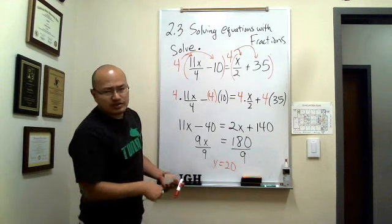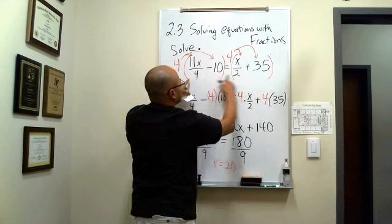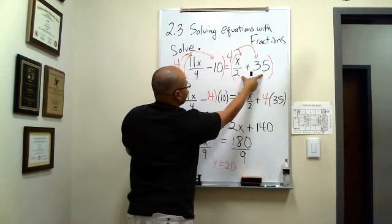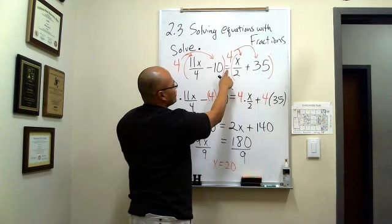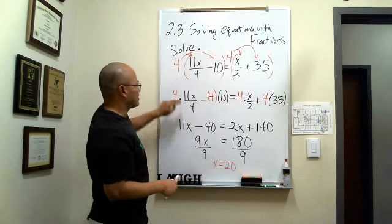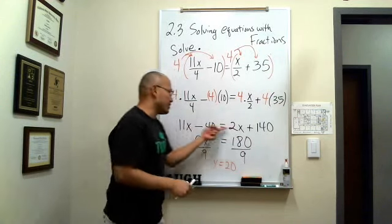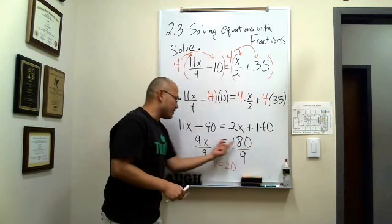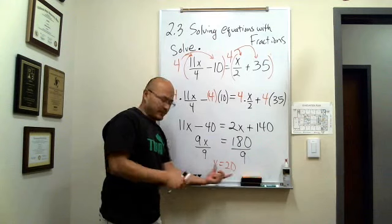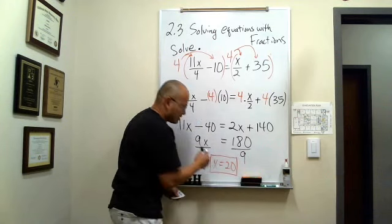Notice that when you're solving an equation, you start with an equation — two expressions with an equal sign in between. So notice the very first line, you have an equation. The second line, you have another equation. The third line, another equation. The fourth line, still an equation. And your final answer is also an equation. So whenever you're solving equations, every single line in your work is actually an equation.